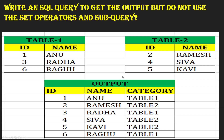So here is the question: write an SQL query to get the output but do not use the set operators and subquery. Here we have Table 1 and Table 2. Both tables have the same columns — id and name. Table 1 has ids 1, 3, 6 with names Anuradha and Raghu. Table 2 has ids 2, 4, 5 with names Ramesh, Shiva, and Kavi.